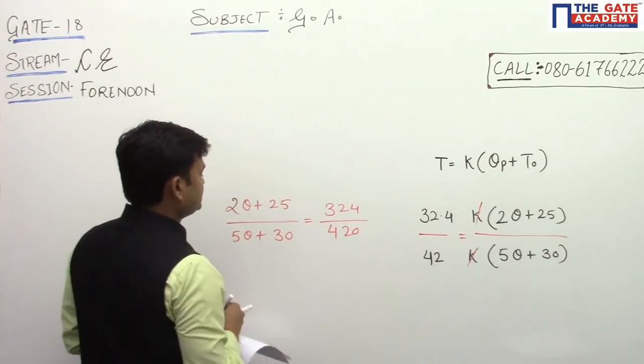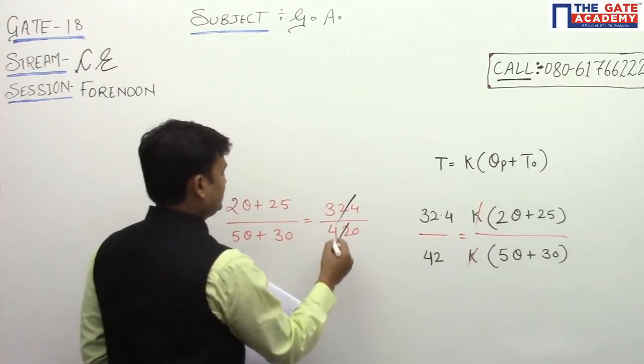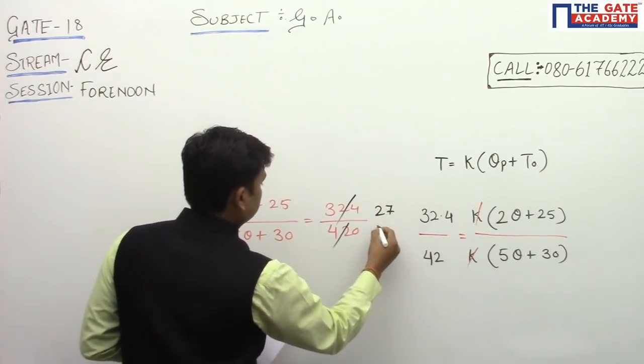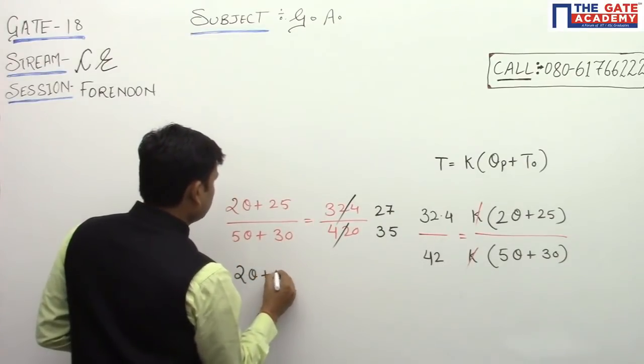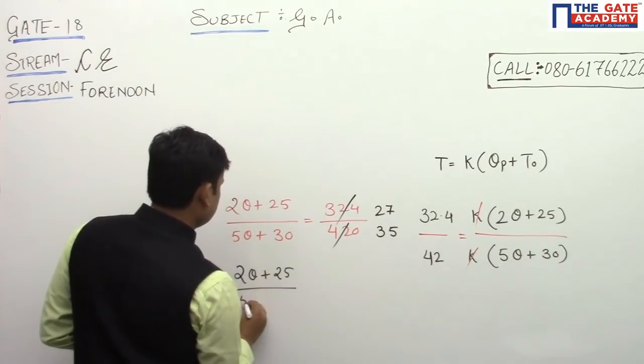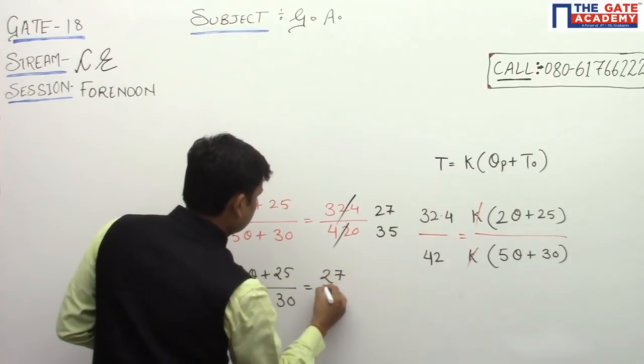I will write this as 324 upon 420. If I simplify this, I will get 27 and 35. So (2 theta plus 25) upon (5 theta plus 30) equals 27 upon 35.